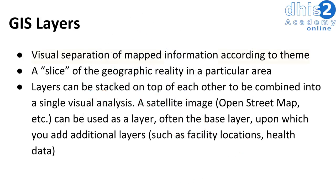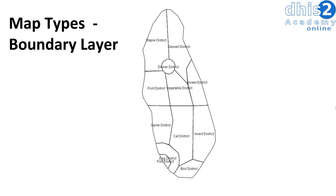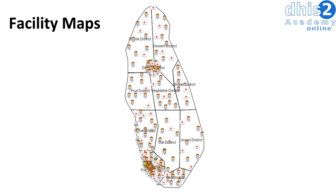Let's take a look at some examples of layers within DHIS2. This is what we refer to as a boundary layer within DHIS2. This maps the boundary of a particular location — we can see here that the districts of Trainingland have been mapped. This is an administrative layer referred to as the boundary layer. We can then add in the facilities on top of this boundary layer. You can see the boundaries of the districts, and within those districts we also have the different facility types available. That is considered an additional layer on top of the boundary layer.